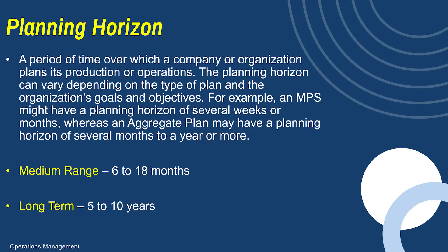Now let's go over a few key terms when it comes to the master production schedule. First, we have the planning horizon — that's just the length of time it takes to plan, forecast, schedule, and produce a product. Medium range planning horizon is six to 18 months; that is industry standard. Sometimes we have long-term planning, which is around five to 10 years. The general rule is a company just has to make sure their planning horizon is long enough for them to actually produce the product.